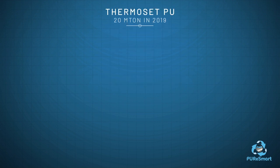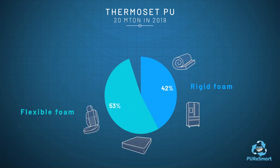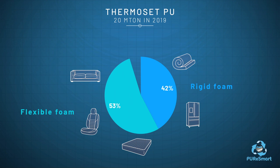Thermoset polyurethanes account for the highest market share, owing to their high resilience, durability and versatility. Rigid foams comprise around 42% of the production, with applications in construction materials for thermal and sound insulation. Flexible foams comprise around 53%, with applications in mattresses, car seats and furniture.